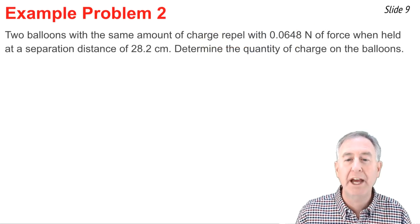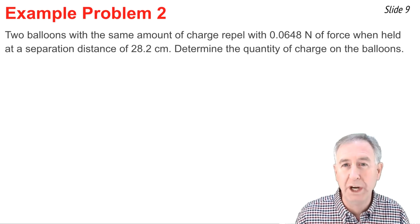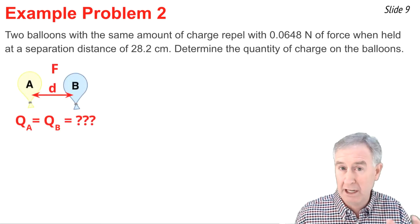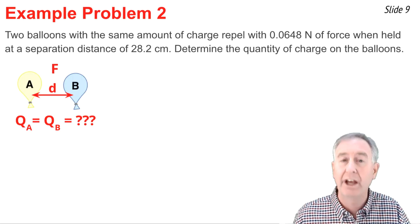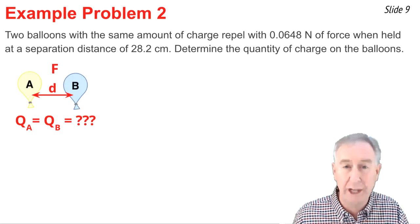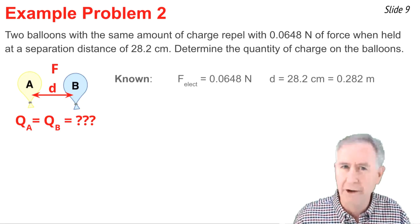In example problem two, I have two balloons with the same amount of charge. And I know the force of repulsion between them, 0.0648 newtons. And this occurs when they're 28.2 centimeters apart. So my mental picture is that I have two balloons. I know the force. I know the distance. And I know that QA is equal to QB, but I don't know what the value is. It's what I'm looking for. So here's what I know. I know F electrical. I know D.